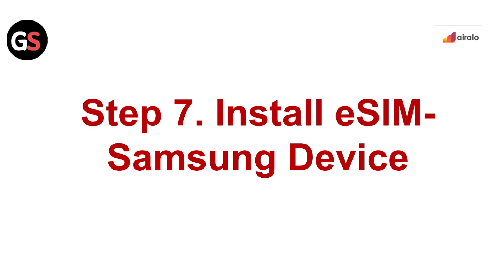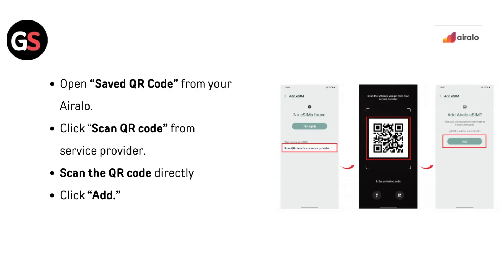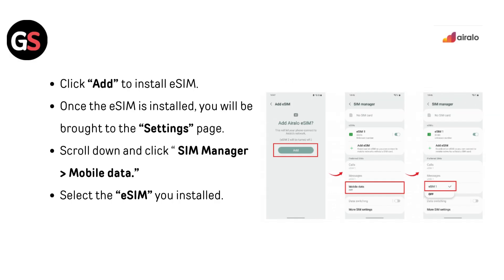Step 7 — Install eSIM on Samsung Devices: Open Settings and go to Connection, then SIM Manager. Select Add eSIM and open the saved QR code from AirLo, or click Scan QR Code from Service Provider and scan the QR code directly. Click Add to install the eSIM. Once installed, you will be brought to the Settings page — scroll down, click SIM Manager, go to Mobile Data, and select the eSIM you installed.